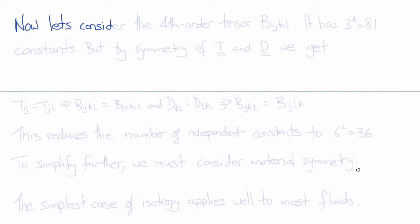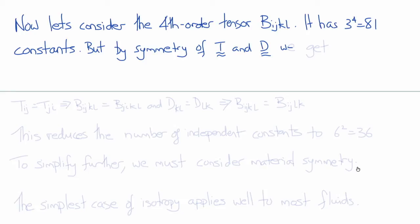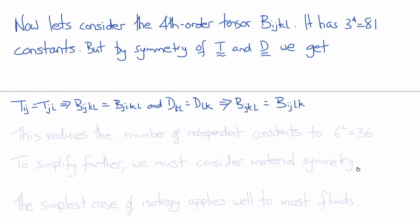Now let's turn our attention to the fourth-order tensor B_ijkl. Since we have assumed that the relationship between the stress tensor and the rate of deformation tensor is linear, this means that the components of B_ijkl are constant, but there are 3 to the power of 4 of them, meaning there are 81 constants. We can simplify this somewhat. Considering the symmetry of the stress tensor T and the rate of deformation tensor D, we can write that T_ij must equal T_ji, which means that B_ijkl must equal B_jikl. Similarly, from the symmetry of D, we have B_ijkl equal to B_ijlk. This reduces the number of independent constants in B_ijkl from 81 to 36.